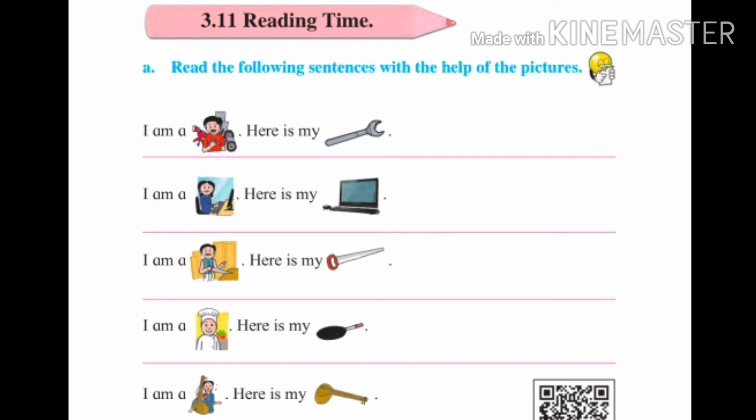Now we see the third sentence: I am a carpenter. Here is my nail. In the first half of the sentence there is a picture of a carpenter, and in the remaining half there is a picture of a nail, which is a tool of a carpenter. So we complete this sentence: I am a carpenter. Here is my nail.